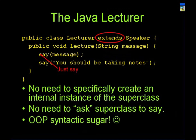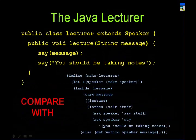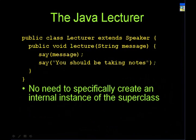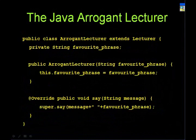There's no need to specifically create an instance of a super class — you just use extends and don't have to ask the super class to say anything. These are all syntactic sugar. By not doing this explicitly, it doesn't mean that Java doesn't keep track of these things — it actually does. Java does everything automatically for you.